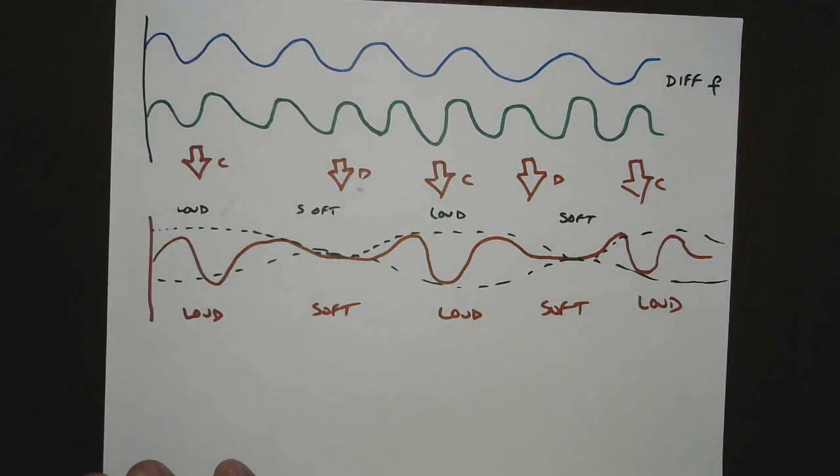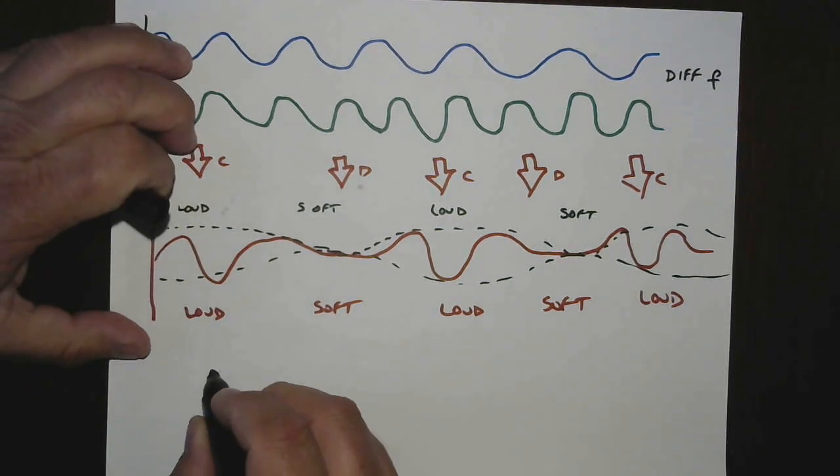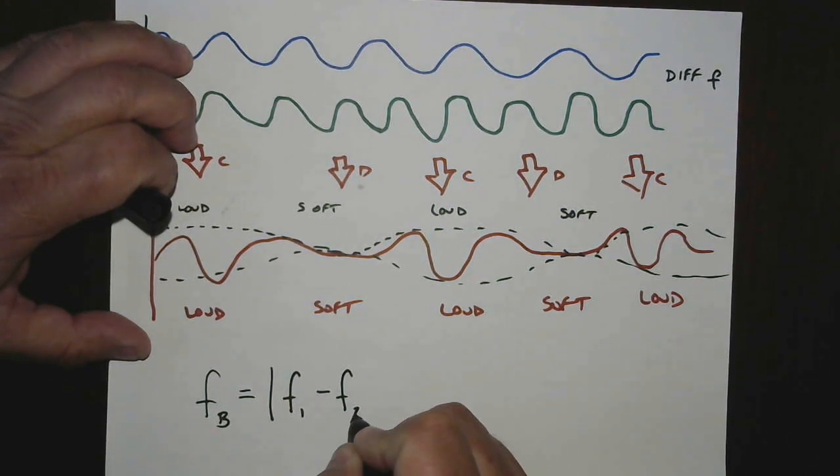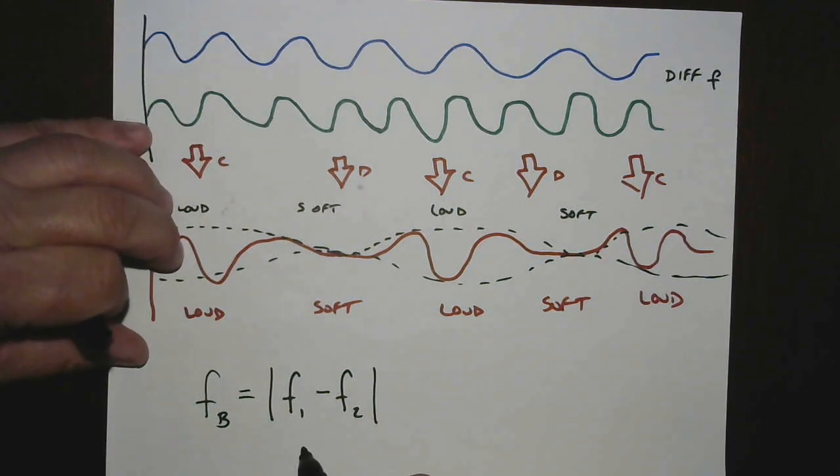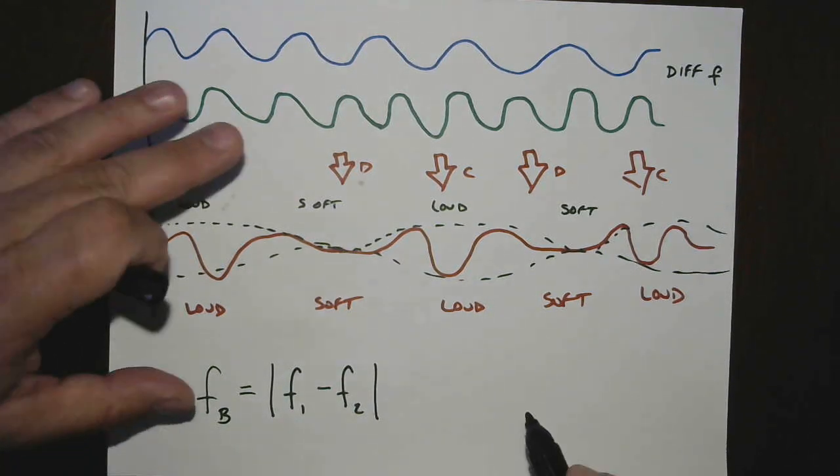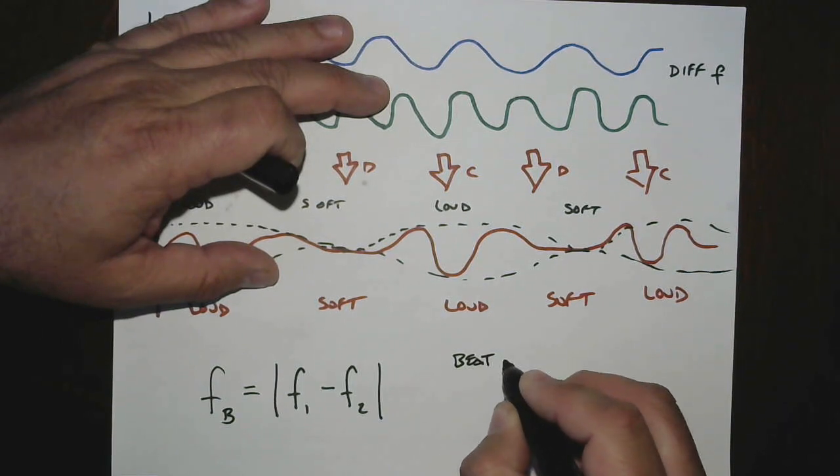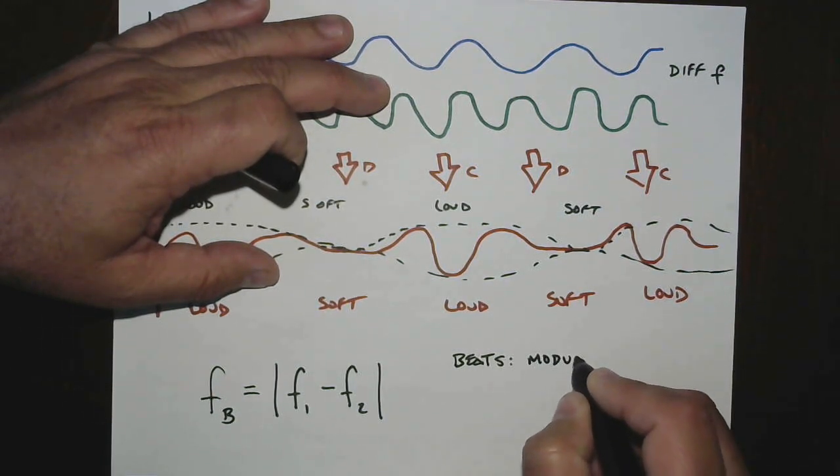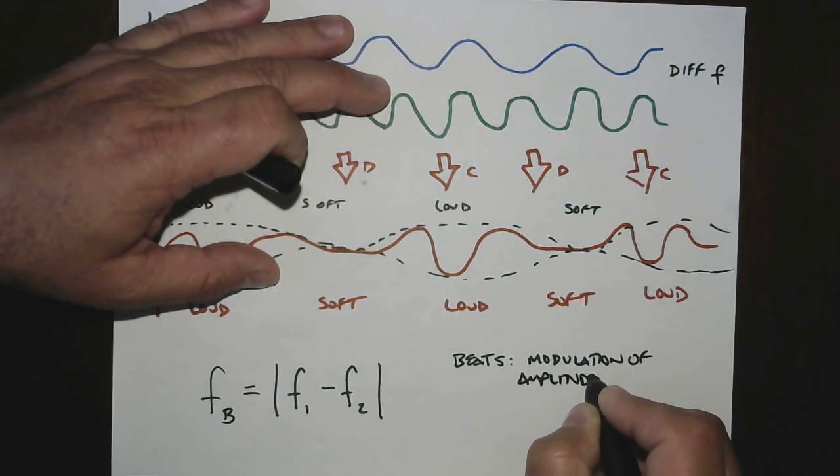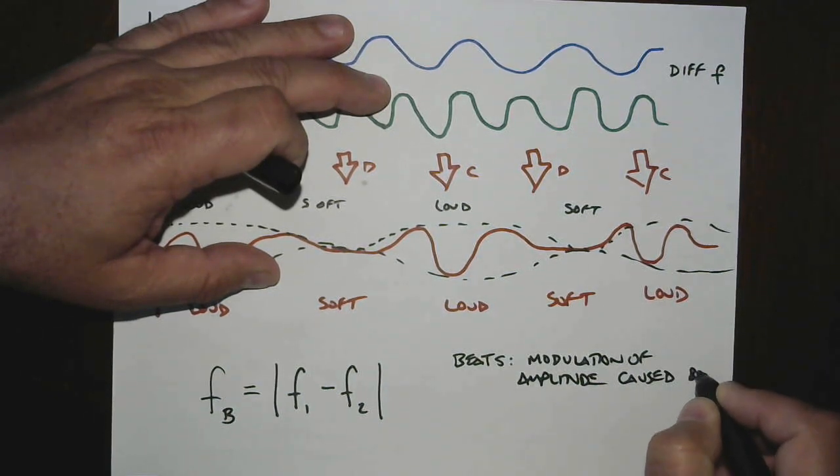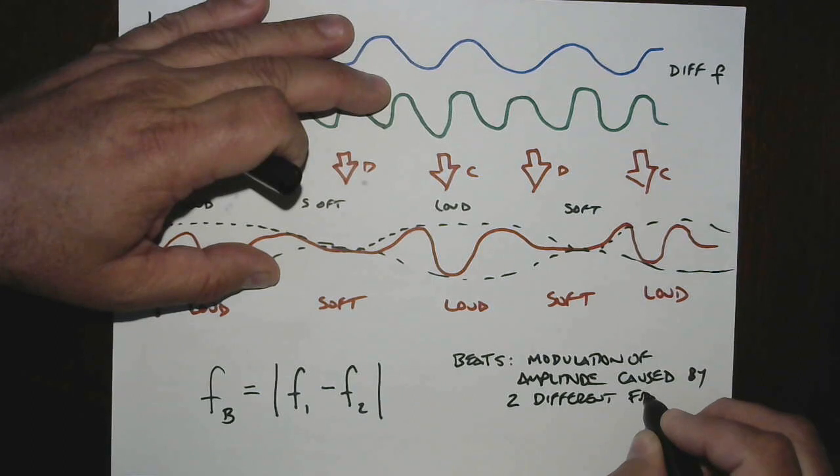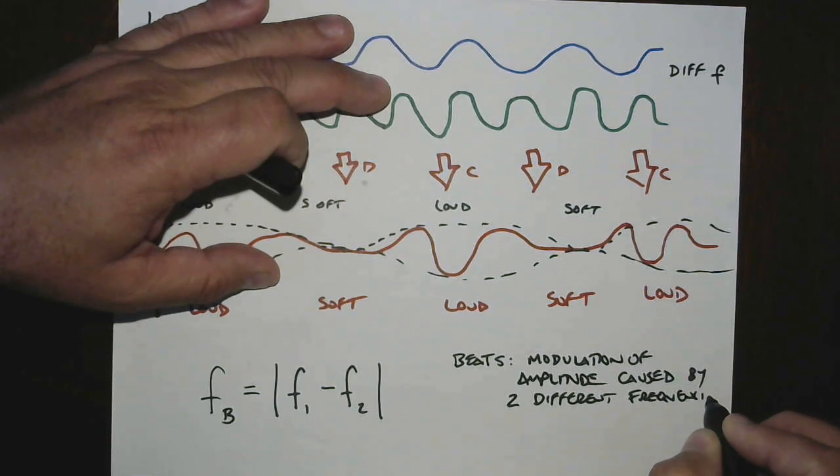The formula that goes along with this is that the beat frequency, I'll call it Fb, is just equal to the difference between the two frequencies, the absolute value of the difference. We don't care whether one is higher or lower than the other. There's no such thing as a negative frequency, but the beat frequency will be the difference between the two. So a beat frequency, or beats, is a modulation or changing of amplitude caused by two different frequencies interfering.